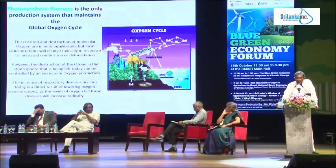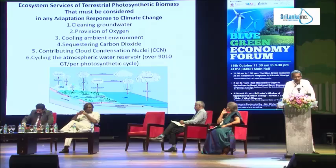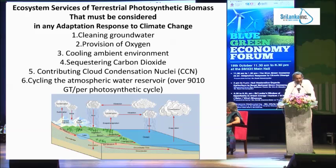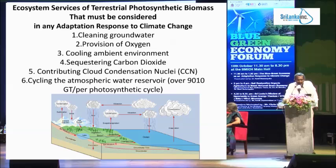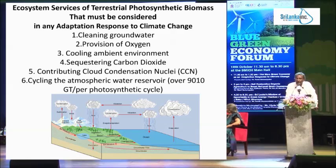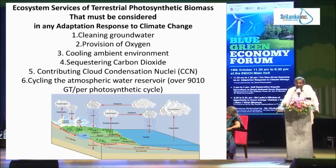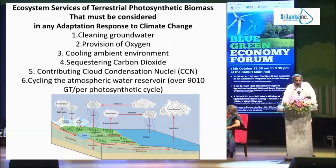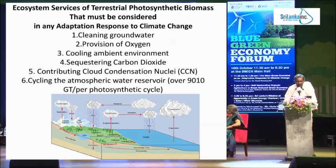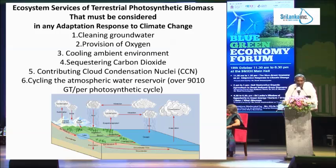In summary, the ecosystem services of terrestrial photosynthetic biomass that must be considered in any adaptation approach to climate change include: cleaning groundwater, provision of oxygen, cooling the ambient environment, sequestering carbon dioxide — which is what we are currently paying millions of dollars for, yet it is just one function of photosynthetic biomass — contributing to cloud condensation nuclei, and cycling the global atmospheric water reservoir. This is the value of terrestrial photosynthetic biomass. Now, what has the economist got to say about that value?